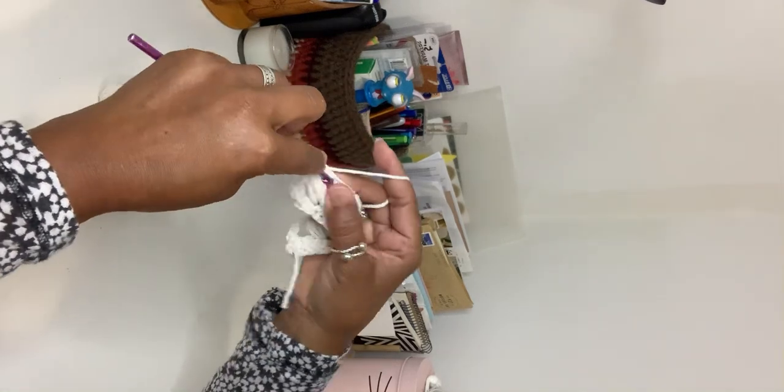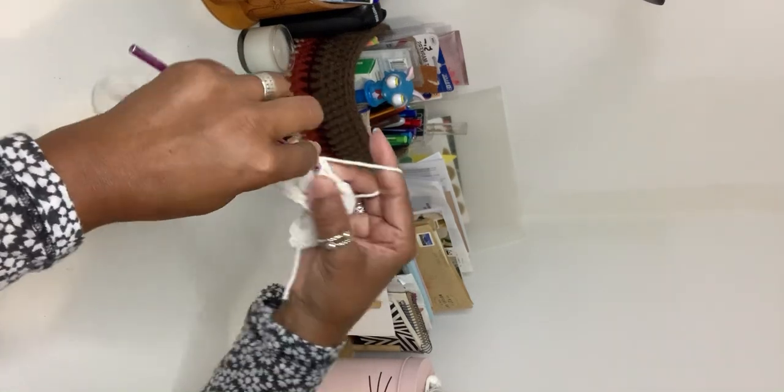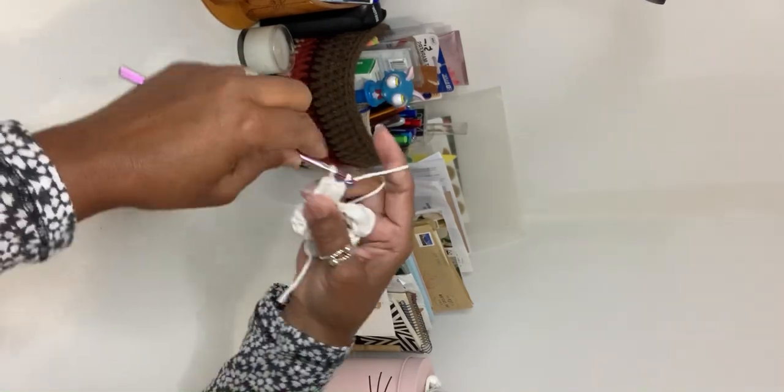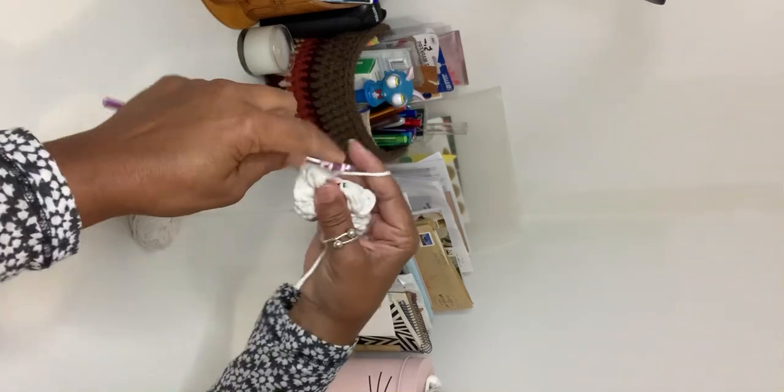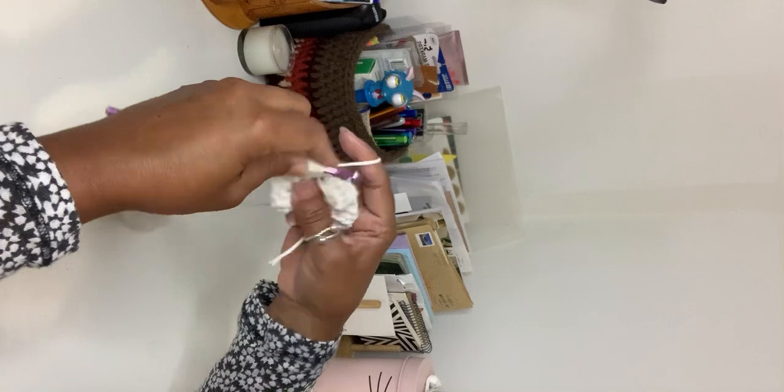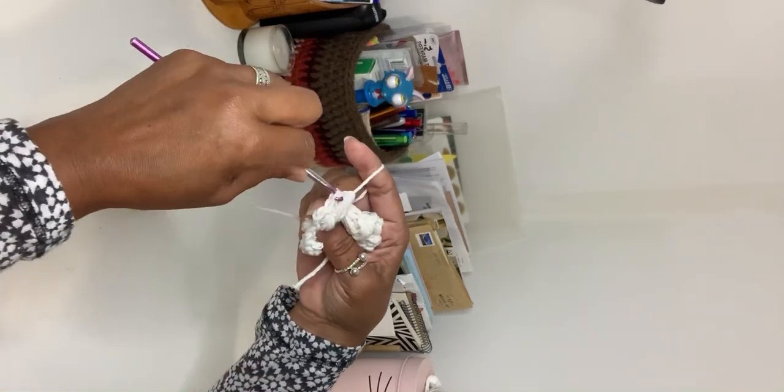In the center of the next V stitch, you do another puff stitch - one, two, three, four. That's the puff stitch. You do one to close, then you go one, two, three, four, one to close.